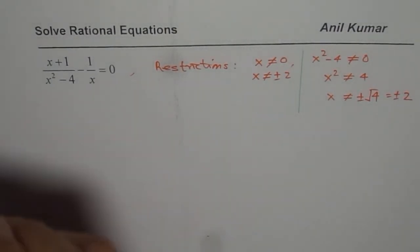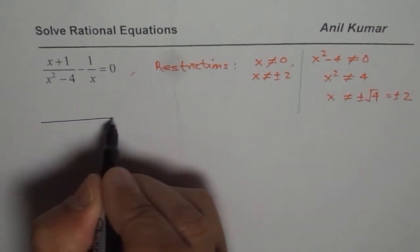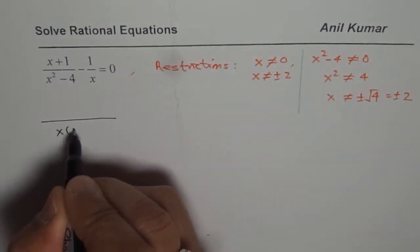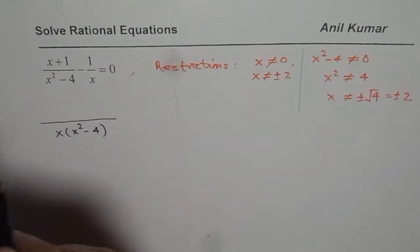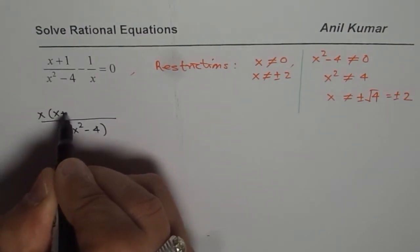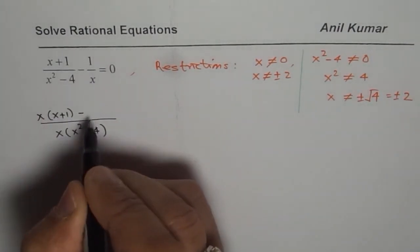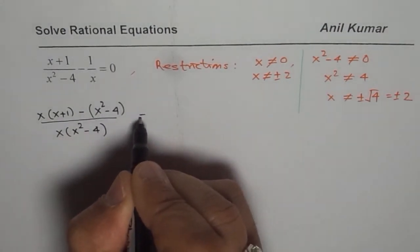So we have x plus 1, this and then. So let us take a common factor here. So the common factor is x times x squared minus 4. And that means you have to multiply the first term by x, you get x times x plus 1 minus, that should be multiplied by x squared minus 4. This is all equal to 0.